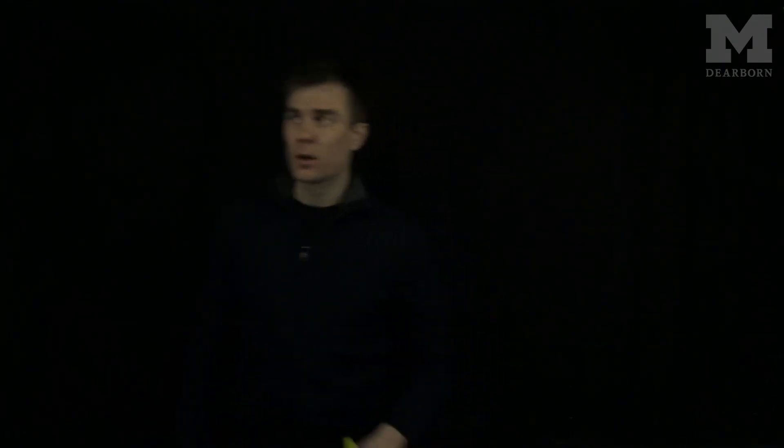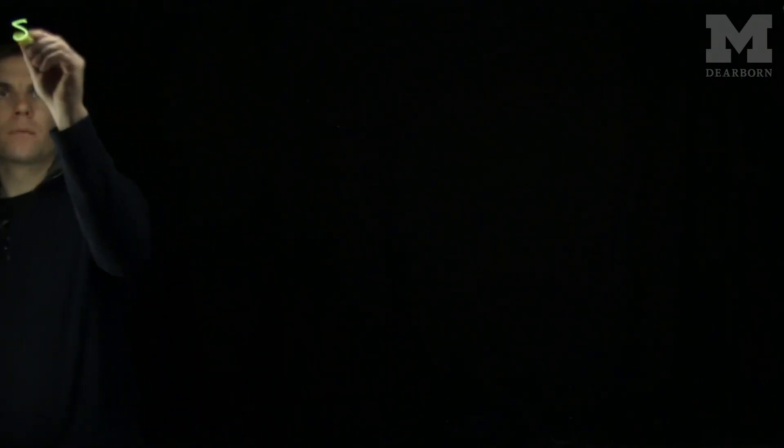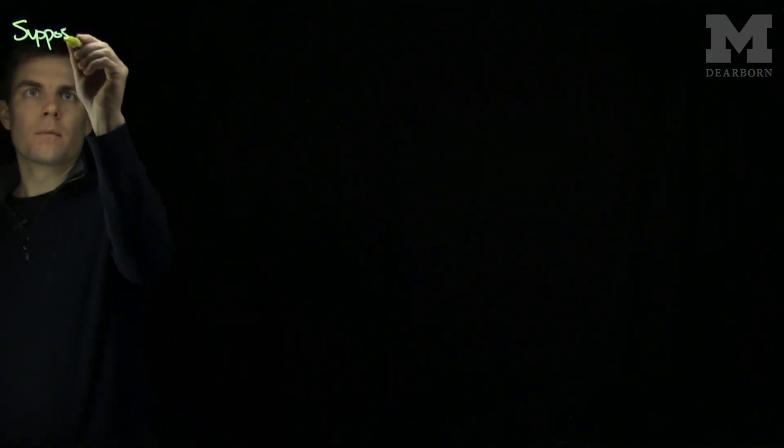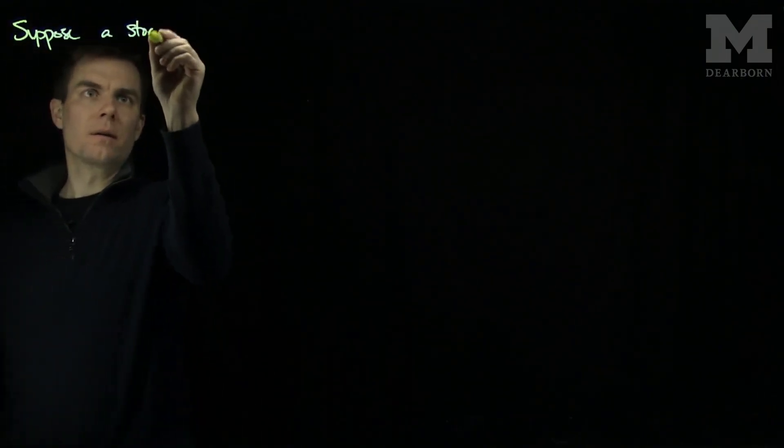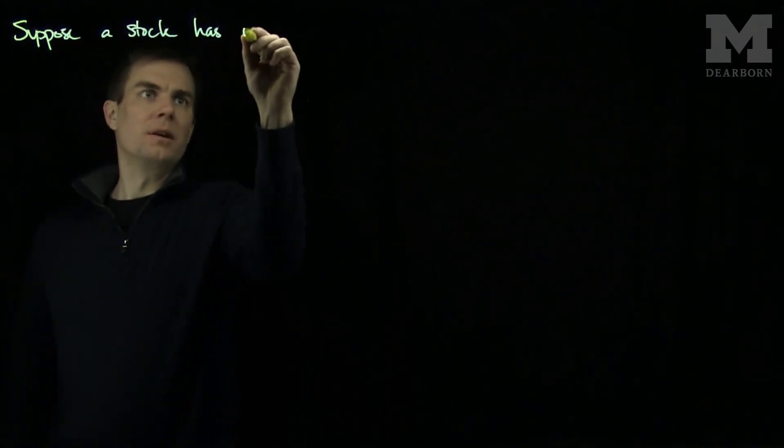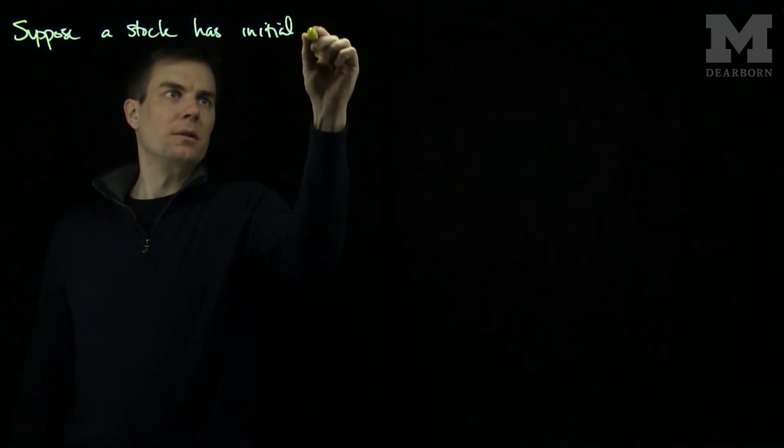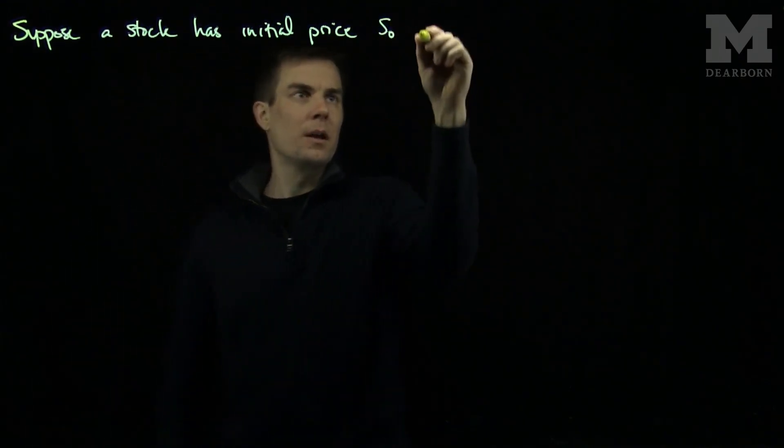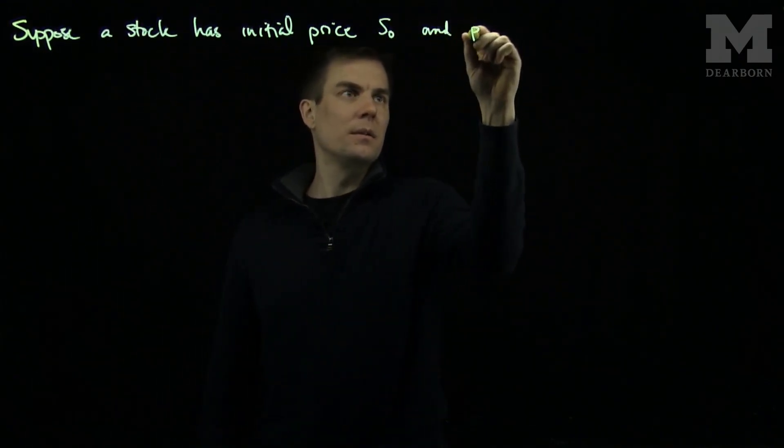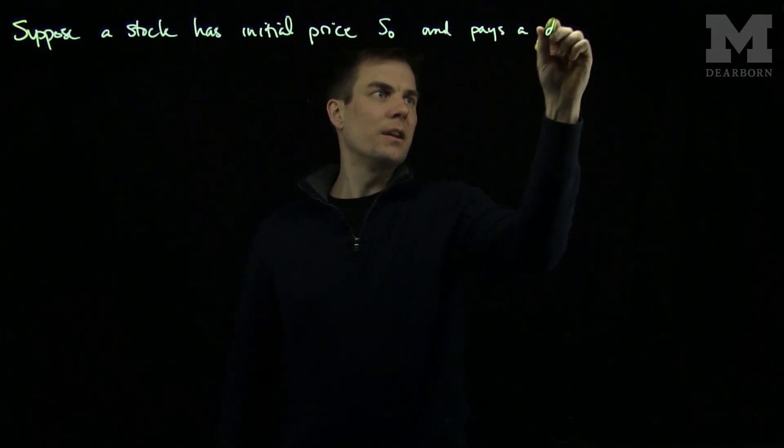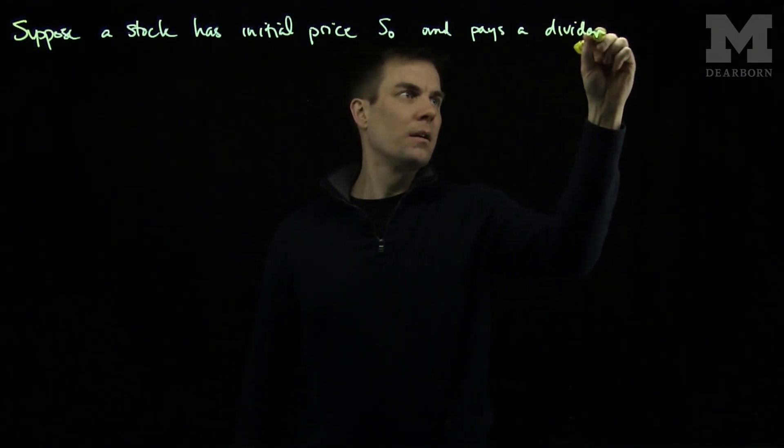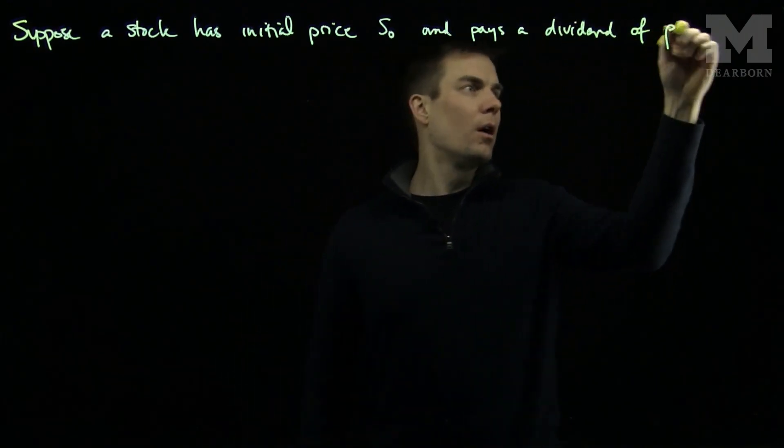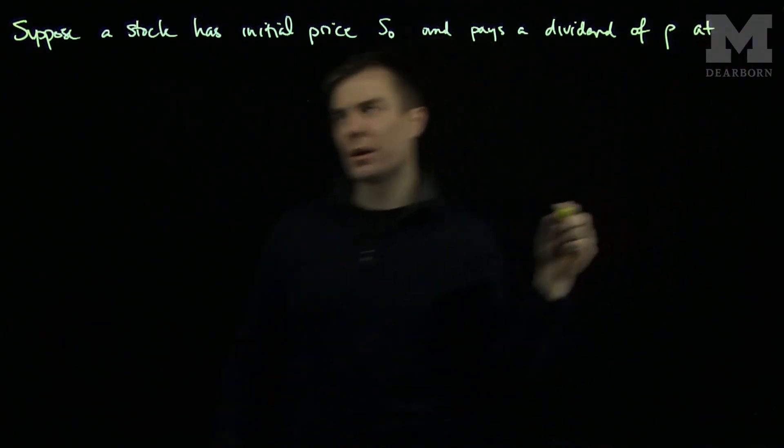Hello, students. In this video, we'll see how to price forward contracts when there are discrete dividends. Suppose a stock has initial price S0 and pays a dividend of rho at every year.